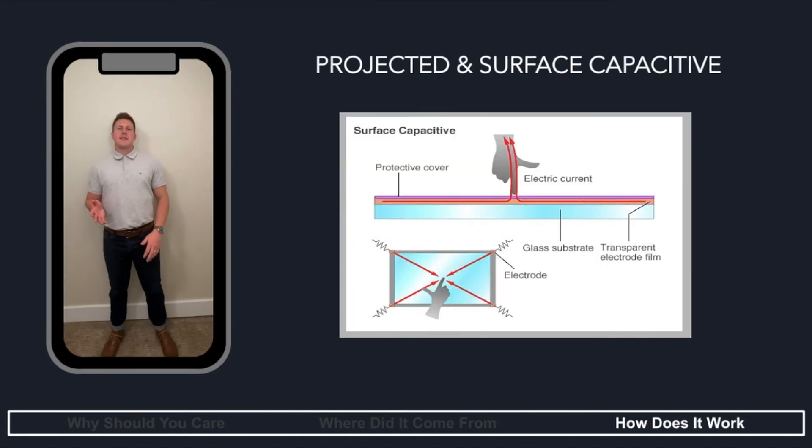Next, we have projected and surface capacitive touchscreens. So you'll remember a capacitive touchscreen uses a layer of electrodes and senses the conductivity of the skin on your finger. The primary difference between projected capacitive and surface capacitive touchscreens is the projected uses two layers of electrodes, whereas the surface uses a single layer of electrodes. Furthermore, only the projected capacitive touchscreens support multi-touch commands.